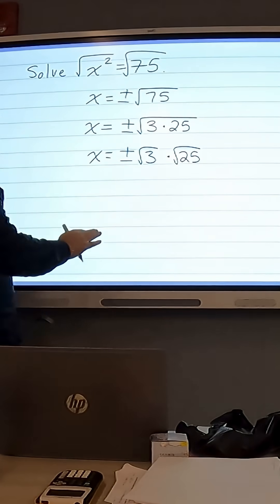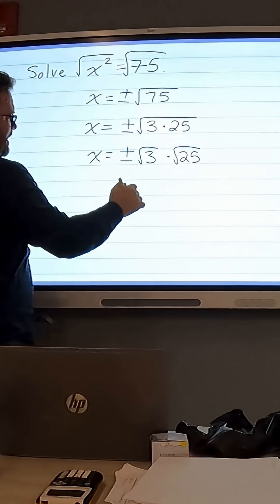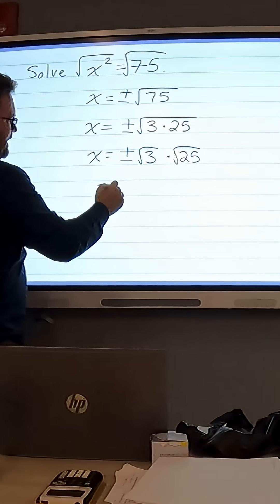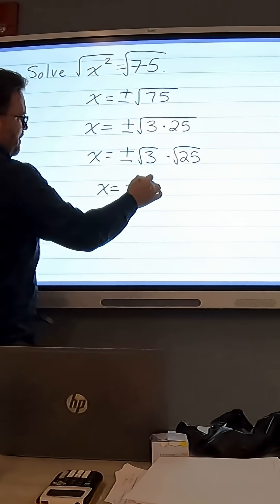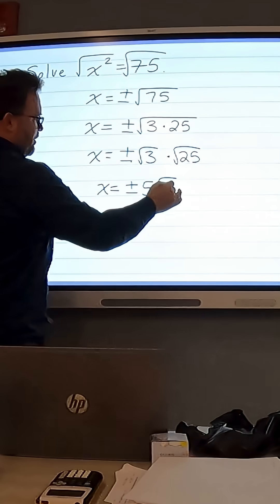The square root of 3 we really can't simplify, but again, the square root of 25 is 5, so we can write this as x equals plus or minus. I'm going to bring the 5 and put it in front, 5 times the square root of 3.